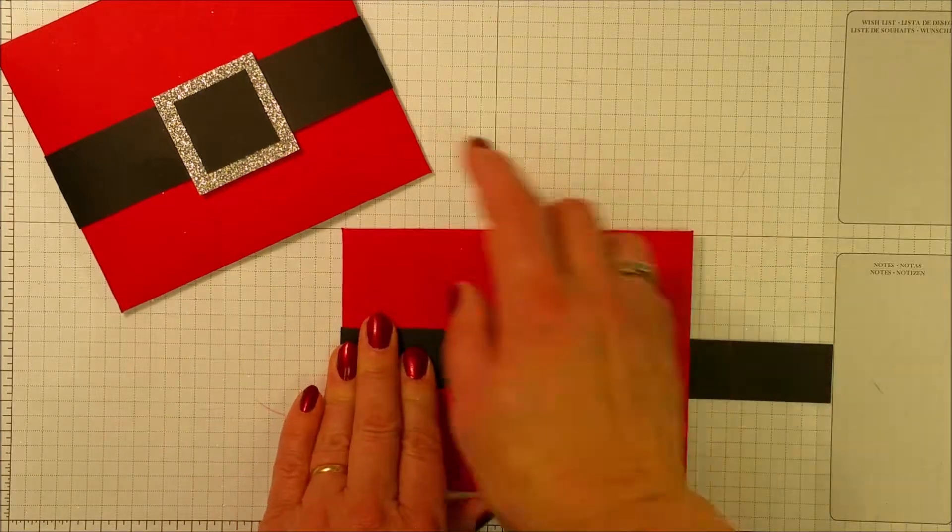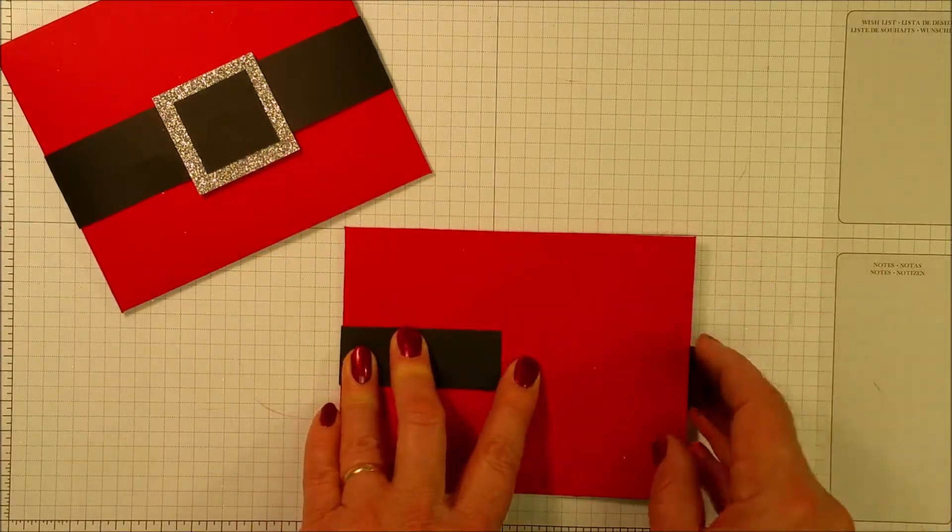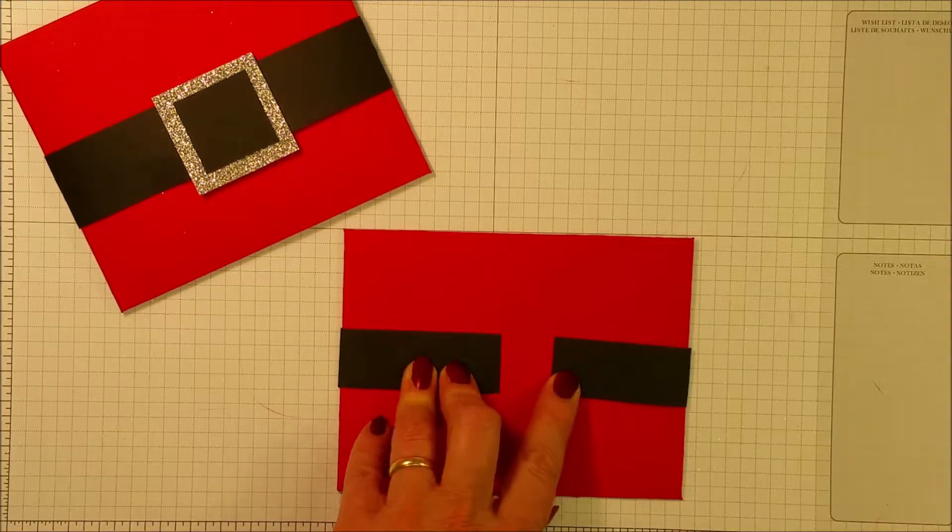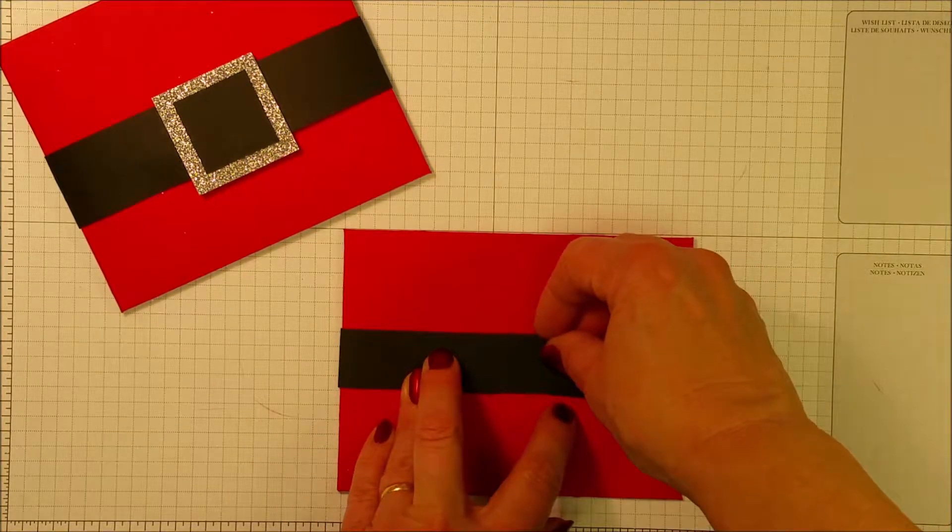So I need a filler, but that's not a problem because it will be hidden behind the buckle. So you can see that little bit of a gap, but I'm just going to place a piece over it.